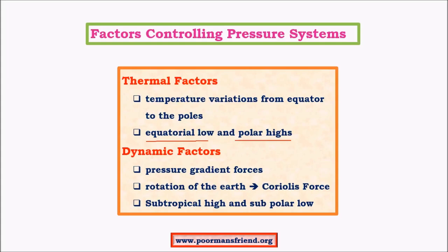These two pressure belts depend on temperature, hence they are the result of thermal factors. Then we have dynamic factors like pressure difference or pressure gradient force, and also Coriolis force, which is very important. Coriolis force is an apparent force which is a consequence of the rotation of the earth. The pressure belts like subtropical high and subpolar low are the ones created due to dynamic forces.